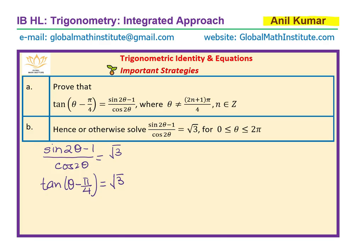We need solutions in the domain 0 to 2π. Tan θ is positive in quadrant 1 and in quadrant 3, so we need to find a related acute angle and both answers. We look at the special triangle which gives us the result: √3, 2, and 1 with the angle π/3.